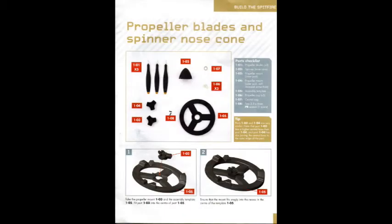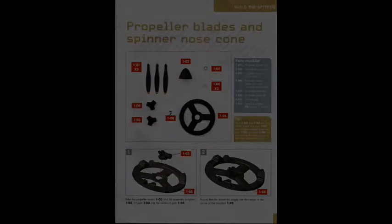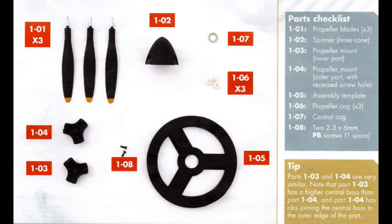Issue 1 is the propeller blades and spinner nose cone. We have 8 parts: O1 propeller blades times 3, O2 spinner nose cone, O3 propeller mount inner part, O4 propeller mount outer part with recessed screw hole, O5 assembly template, O6 propeller cog times 3, O7 central cog, and O8 2x2.3x6mm PB screws. That means one is spare. We do receive two though.